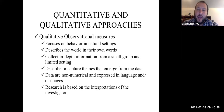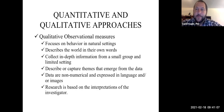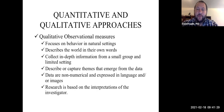Qualitative research data is non-numerical and expressed through language and images. It is very common in the fields of sociology and anthropology, with a lot of these naturalistic observation techniques. The interpretations that are made are based on the investigators, so it is possible that two people could have observed the same events and come to different conclusions — that's what we call inter-rater or inter-judge reliability.